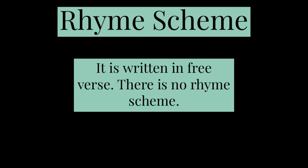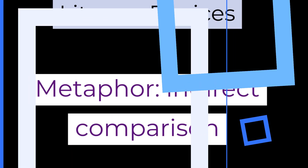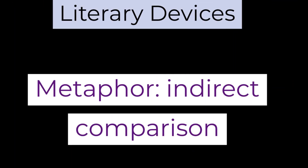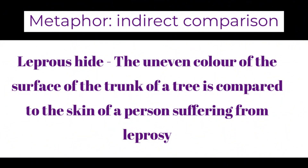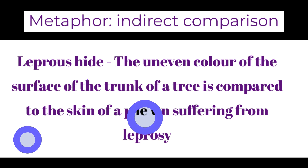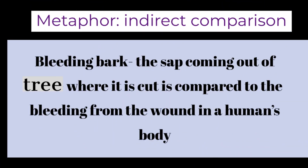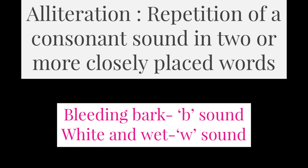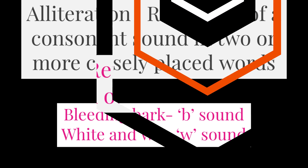Rhyme scheme: the poem is written in free verse, so there is no rhyme scheme. Literary devices: first, metaphor — in 'leprous hide', the uneven color of the tree trunk is compared to the skin of a person suffering from leprosy. In 'bleeding bark', the sap coming out where the tree is cut is compared to bleeding from a wound in a human body. Second, alliteration — in 'bleeding bark' the 'b' sound is repeated; in 'white and wet' the 'w' sound is repeated.